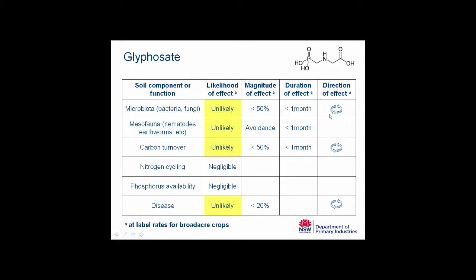Interestingly, the direction of the effect matters — is it a suppression of the microbiota or a stimulation? Some studies have observed suppression, some have observed stimulation, and what does that mean for crop productivity? In terms of the meso-fauna, some studies have shown a few effects, but overall most studies show that at label rates we are not seeing too many effects. Generally speaking, if they don't like it they will avoid it by moving through the soil to areas of lower concentration, but again there is this short duration of effect.